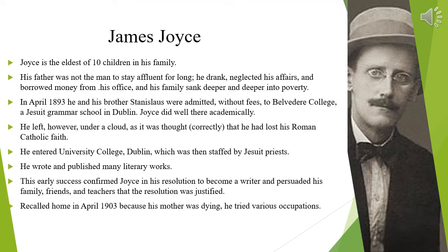Let's answer: who is James Joyce? Joyce is the oldest of ten children in his family. His father was not the man to stay affluent for long — he drank, neglected his affairs, and borrowed money, and his family sank deeper and deeper into poverty. In April 1893, Joyce and his brother Stanislaus were admitted without fees to Belvedere College, a Jesuit Grammar School in Dublin. Joyce did well academically there, but left under a cloud, as it was thought correctly that he had lost his Roman Catholic faith.